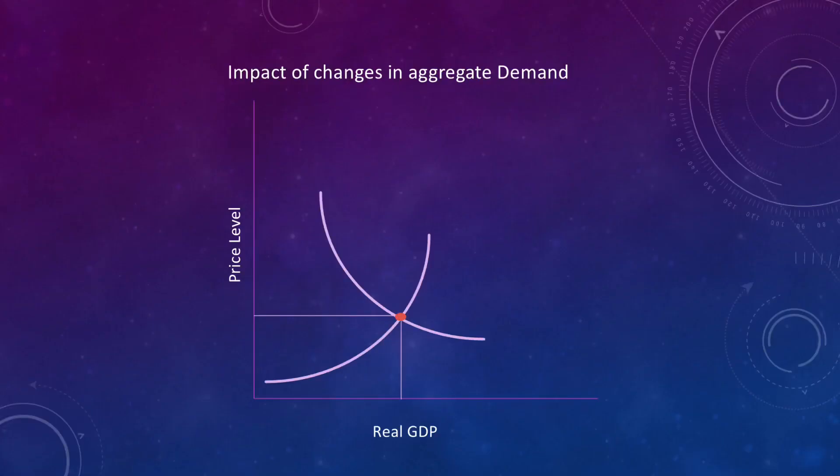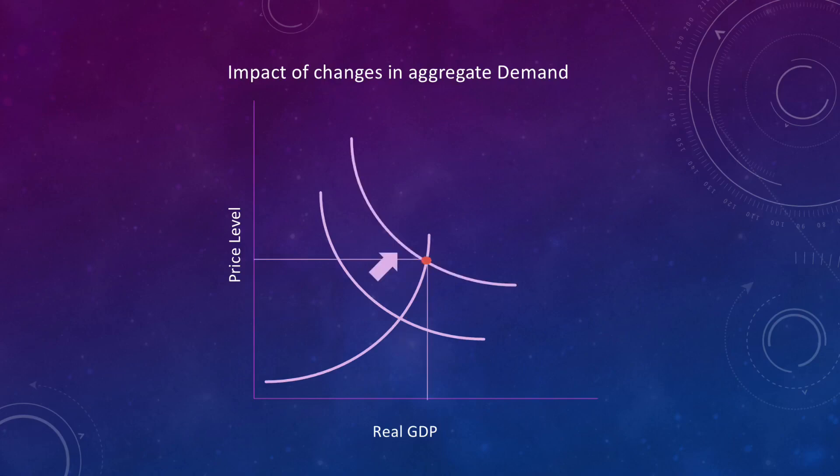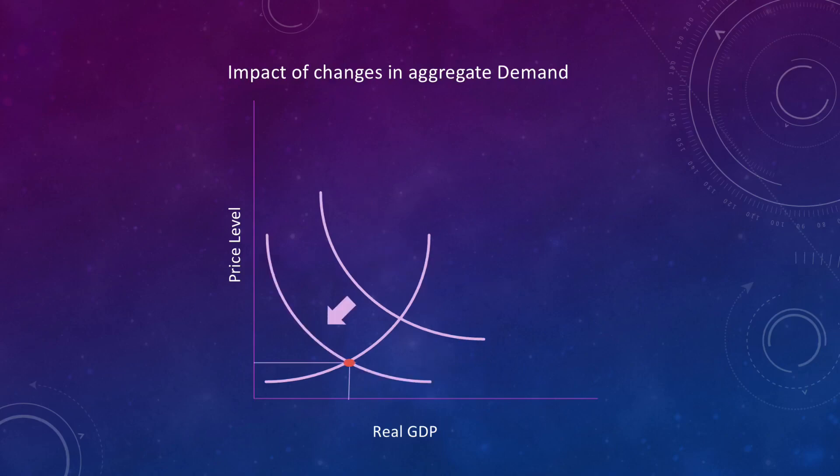Let us review the impact of changes in aggregate demand. Remember, aggregate demand is the downward sloping line. If aggregate demand increases or shifts to the right, both price levels and GDP go up. If aggregate demand decreases or shifts to the left, both price levels and GDP go down.